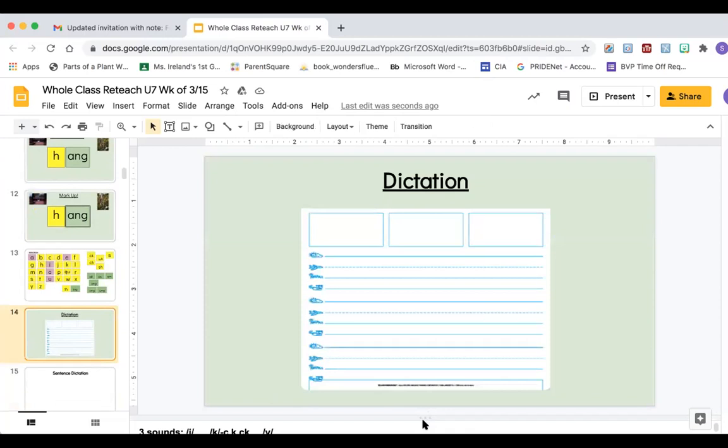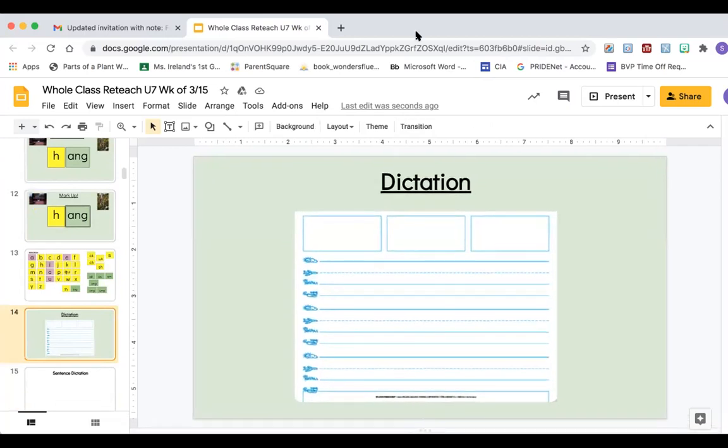Now we are going to practice the sounds that say K. K. There are three different sounds we know that say K. C says K. Write C on your paper or whiteboard. K says K. And the digraph C-K says K. Underline your digraph.